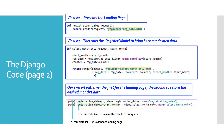Now we'll look at our two different views and our URL config. The first view represents Template Number One — the landing page with the buttons across the top. It's a very simple function-based view called registration_dates. It takes the request as its first argument and returns a render of the request and its template, reg_date.html.